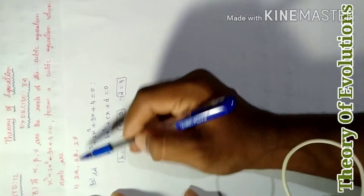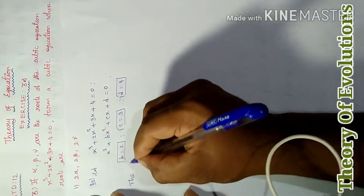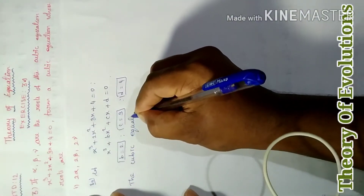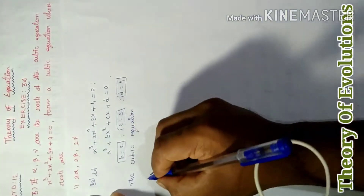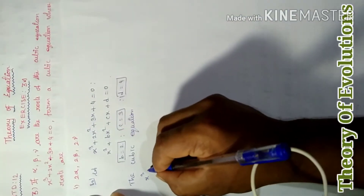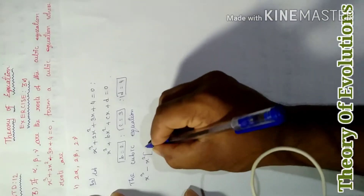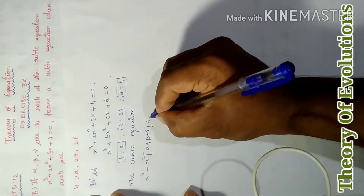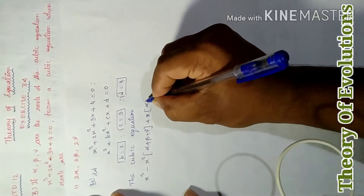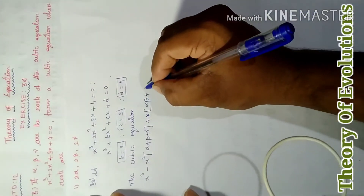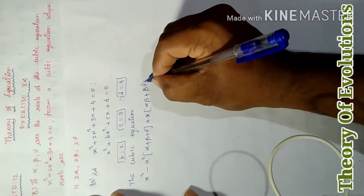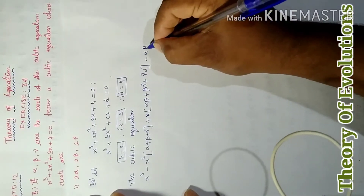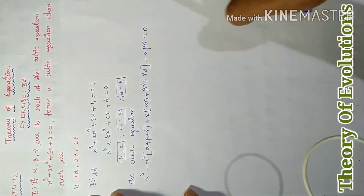For a cubic equation with roots, we use the standard form: x³ − x²(α + β + γ) + x(αβ + βγ + γα) − αβγ = 0.